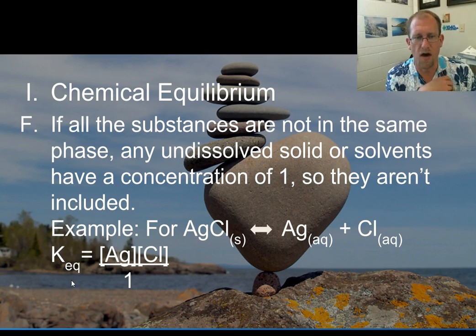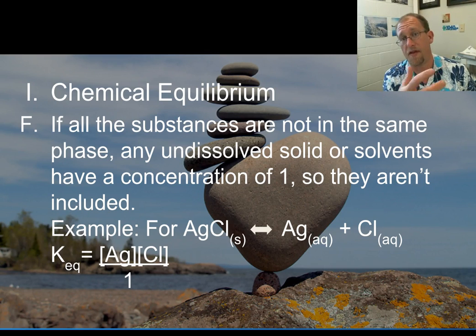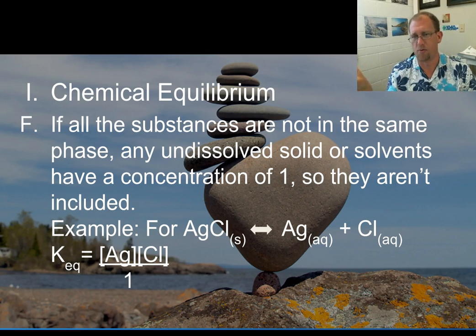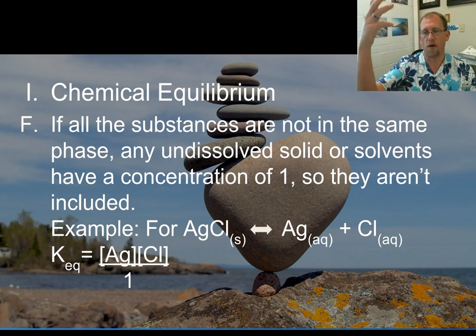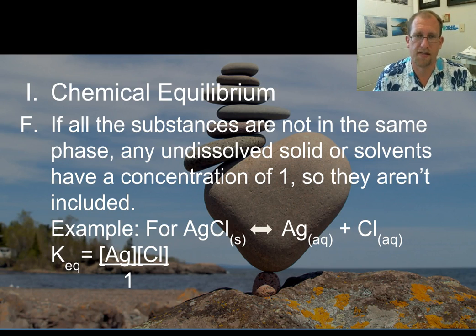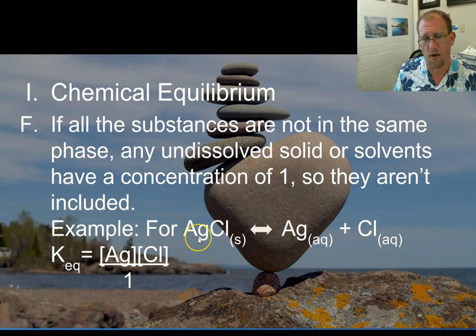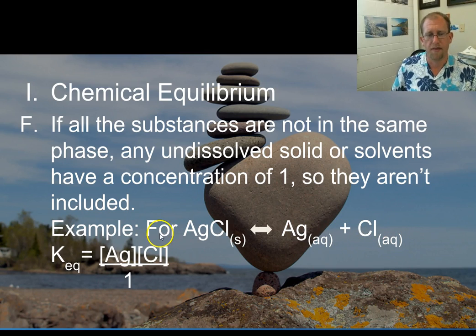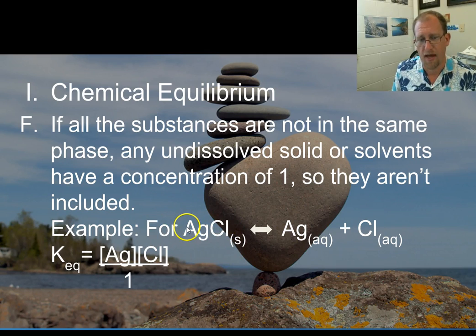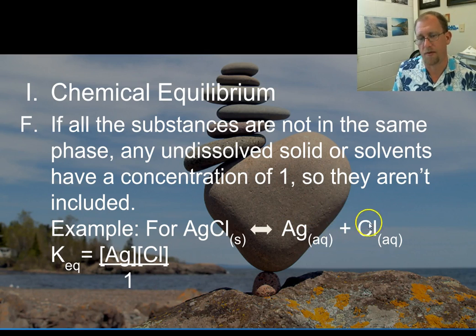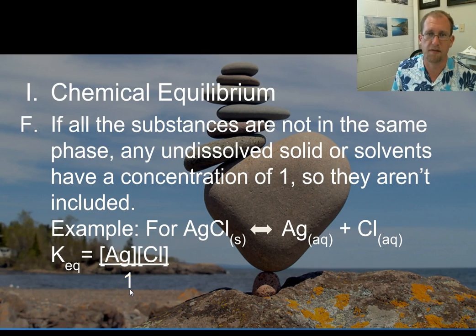If all the substances are not in the same phase, then they don't affect the rate law. If something settles out as a precipitate or bubbles away as a gas, we set its concentration to one so that it doesn't affect the math. For example, in the reaction where solid silver chloride dissolves into aqueous silver ions and aqueous chloride, the forward reaction's reactant is a solid, so we put a one there and we only care about the reverse reaction — the products C and D. This means the forward reaction doesn't actually affect the equilibrium constant.